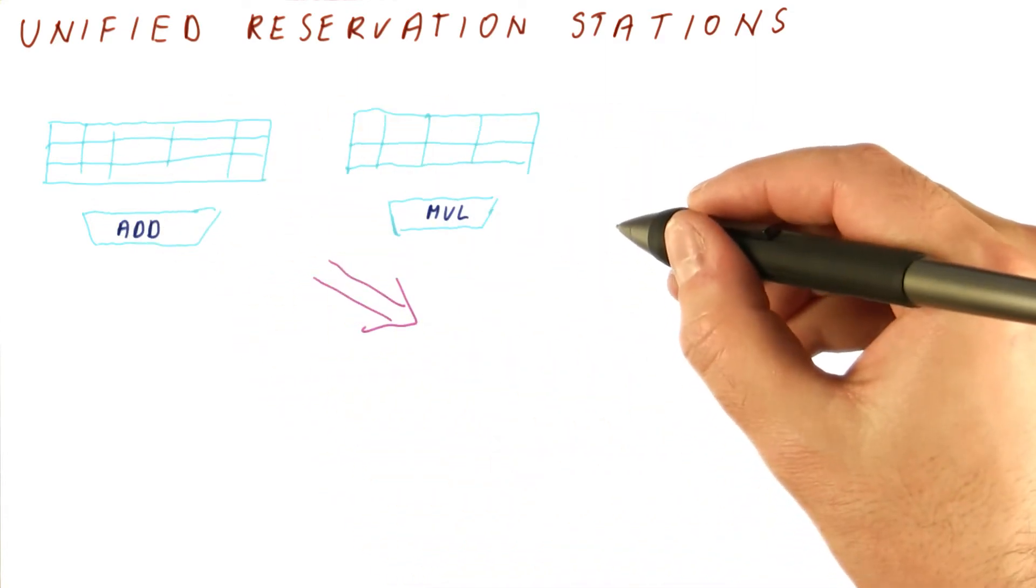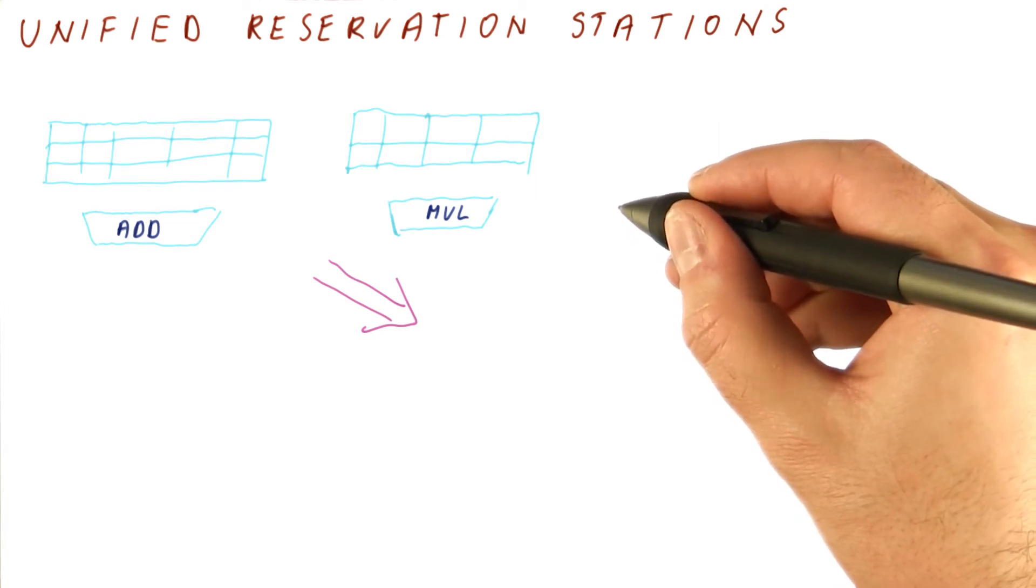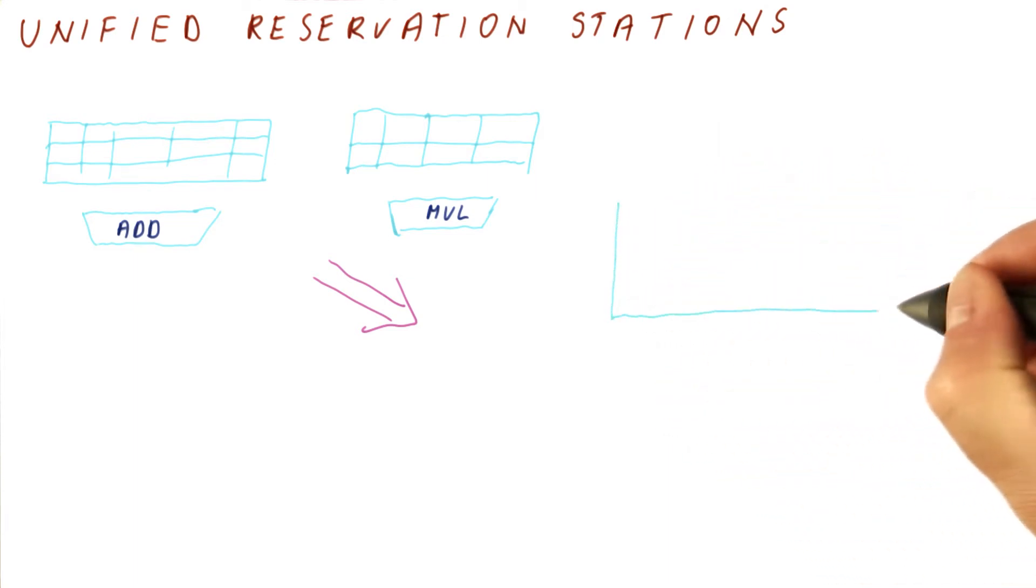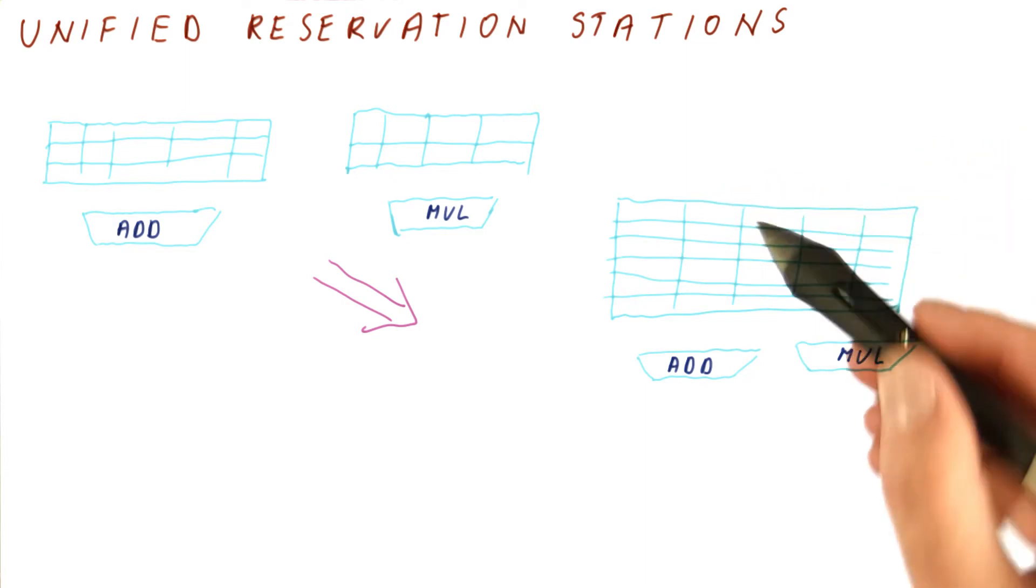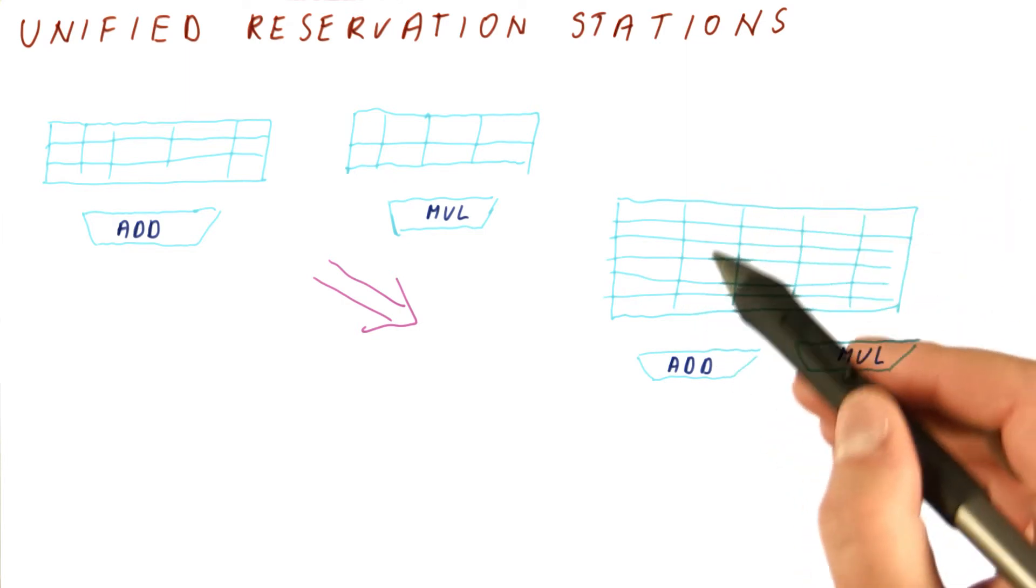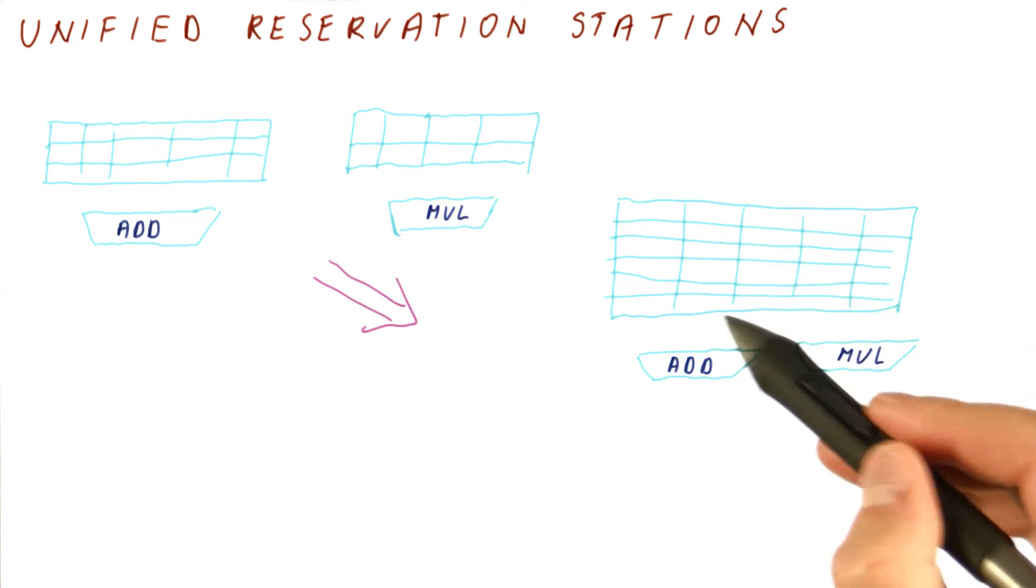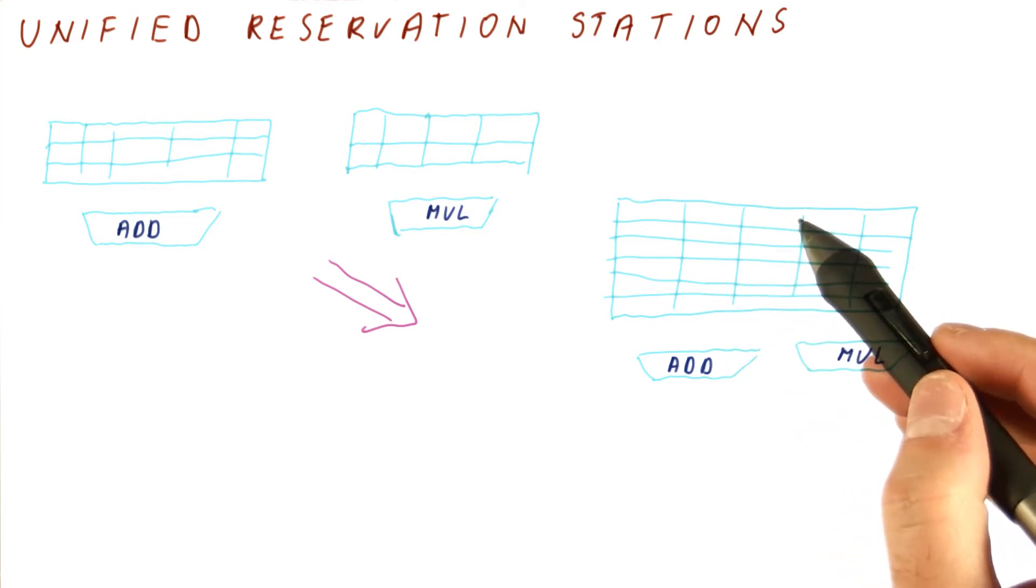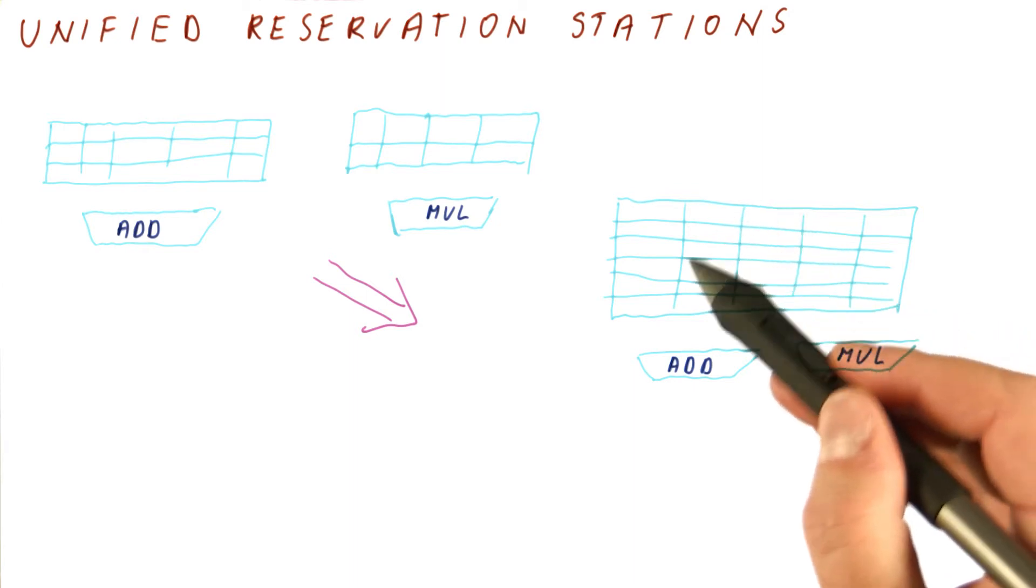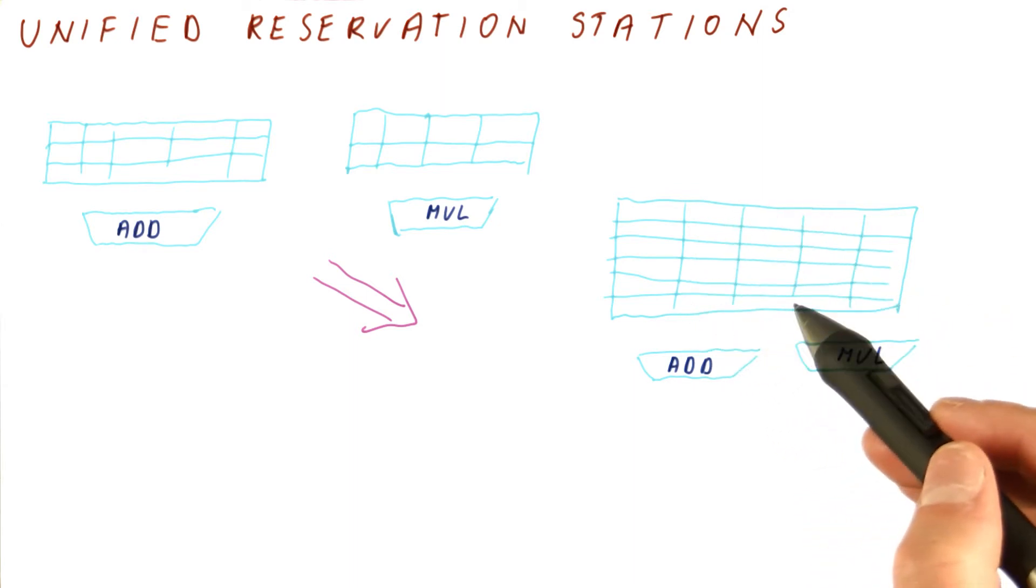we can go with the so-called unified reservation stations approach, where all of the reservation stations are in one big array. Now when we need to issue, we need to grab one of these reservation stations, but it doesn't matter which unit it is for. Basically, all of the reservation stations are equal. So the benefit of this is that as long as there are any available reservation stations, we can issue instructions.